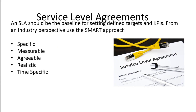SLAs are a baseline between the provider and the customer. The SLA really should be specific, measurable, agreeable, realistic, and very specific as far as times. If you look at the AWS EC2 SLA, Google Cloud, or Microsoft Azure, they're very clear on realistic expectations — what is performed by the vendor and what is performed by you. They also provide response time and bill-back or charge-back clauses.